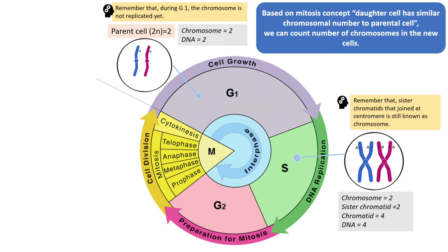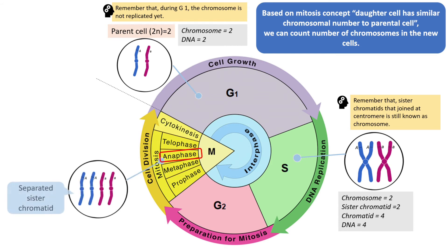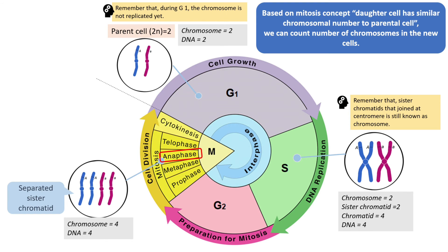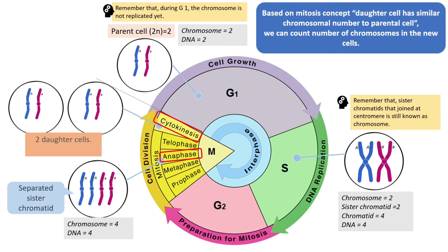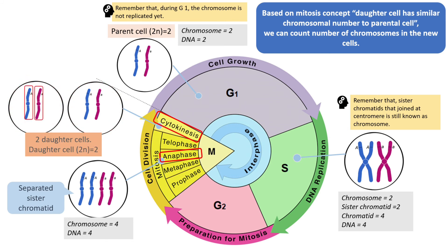These numbers — 2 chromosomes, 2 sister chromatids, 4 chromatids, and 4 DNA molecules — remain the same in G2, prophase, and metaphase. When the cell enters anaphase of mitosis, the sister chromatids separate, so the chromosome number becomes 4 and the DNA number is also 4. Sister chromatids no longer exist at this stage, and the term chromatid is no longer relevant; each separated chromatid is now called a chromosome. At the end of cytokinesis, two daughter cells are produced, each with 2 chromosomes and 2 DNA molecules, the same as the parent cell.